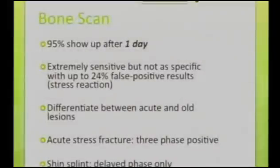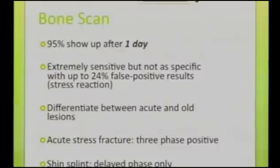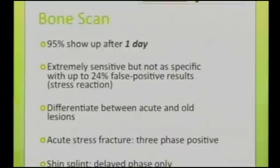The other best investigation for earlier diagnosis is either a bone scan or an MRI. Normally 95% show up on the first day on a bone scan — it is extremely sensitive but not as specific as MRI, with 24% false positive results because even stress reaction can show up. It is very important to differentiate between acute and old lesions. Acute stress fractures are three-phase positive on bone scan, while shin splints show delayed phase only.